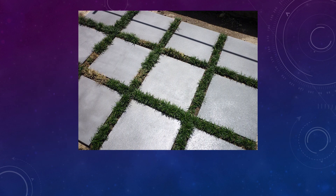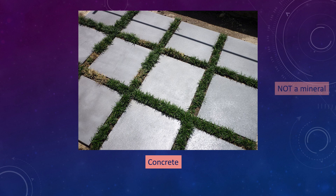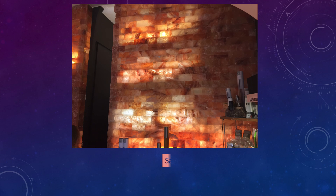Let me show you four things and put you to the test. This is a picture of concrete. Is concrete a mineral? The answer is no, because concrete is a man-made substance, so it is not naturally occurring. Number two, this is a picture I took when I went to Germany — this is a wall of salt. Is salt a mineral? The answer is yes: it's naturally occurring, salt is not alive, it's sodium chloride which is a formula, and it's a solid so it has an internal crystal structure.